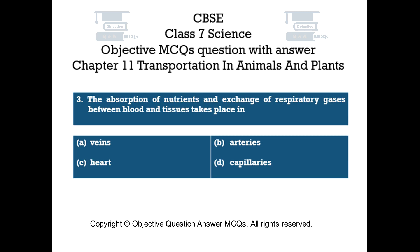Question number 3. The absorption of nutrients and exchange of respiratory gases between blood and tissues takes place in. Option A: Veins. Option B: Arteries. Option C: Heart. Option D: Capillaries.